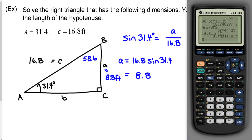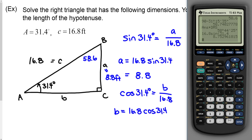So I use cosine of 31.4 degrees equals the adjacent side over the hypotenuse. Side length b equals 16.8 times cosine of 31.4, which gives 14.3 feet. When you get your final answers, make sure they make sense — for instance, the hypotenuse must be the longest side. If a computed side length is longer than the hypotenuse, go back and check your setup.